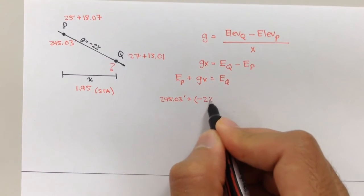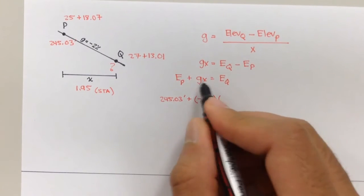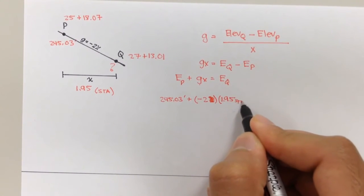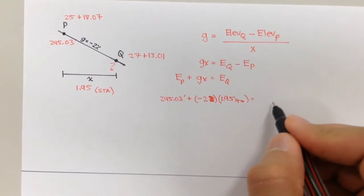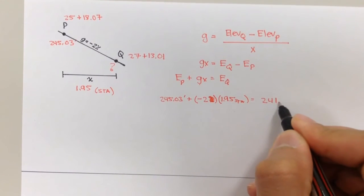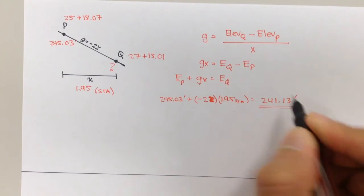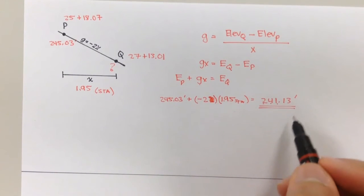Negative 2 percent, or let's just take away the percent, times X, 1.95 stations. We're going to get an answer of 241.13. Our elevation of Q is equal to 241.13 feet.